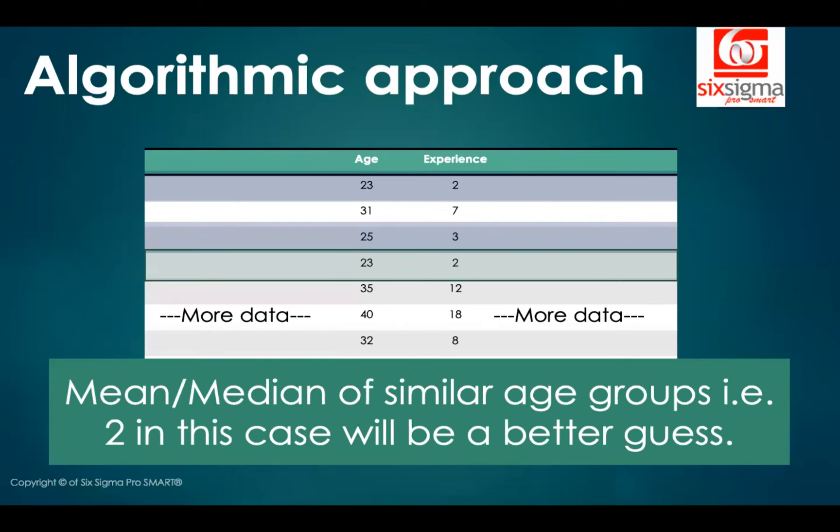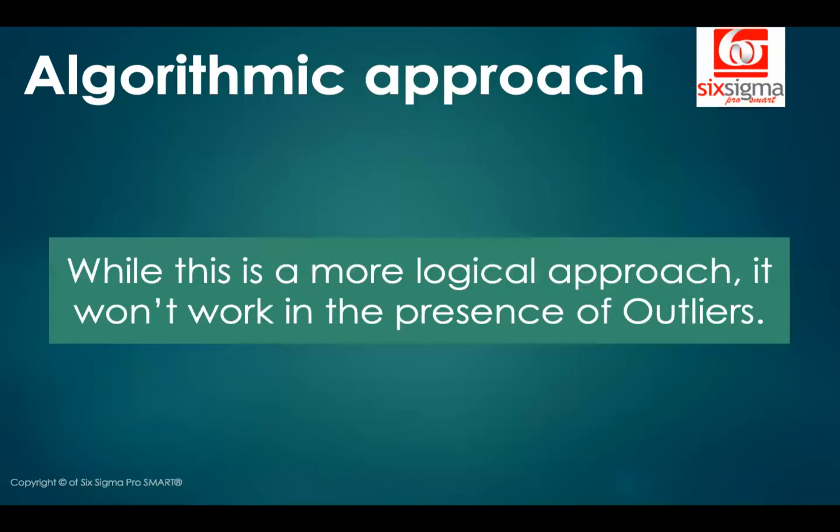While this is a very powerful technique and a more logical technique, the only limitation here is that it would not work when you have outliers present in the data, because the algorithms don't really evaluate things like the human beings do. So if you have outliers present, the algorithm would try to think as if that's a common value and will try to come up with imputation taking the outlier into account. Therefore, now we have our correct order.